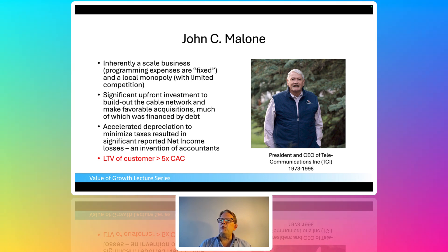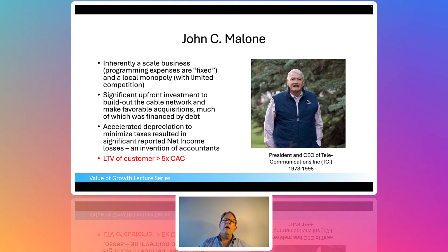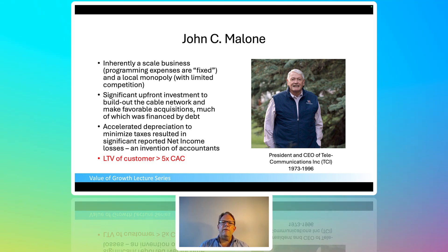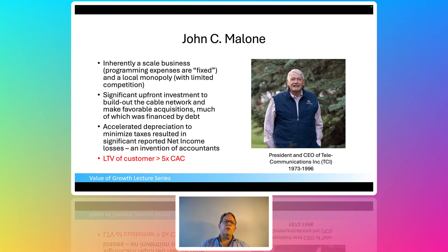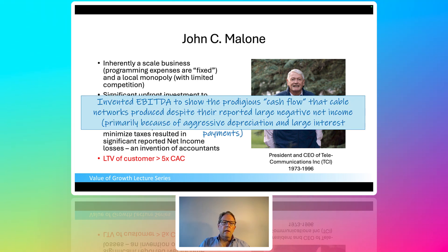John had this simple problem that by traditional measures he wasn't making money. That concerned the bankers and equity analysts, but he needed capital. So he worked up the P&L until he got to the first positive number. The reason I tell this story is that John Malone had a very specific application of EBITDA: he wanted to show he had cash flow that could be used to pay debt and finance acquisitions. We now use EBITDA throughout the private equity world — and that would concern me. John invented EBITDA to show the prodigious cash flow the cable networks produced, despite large negative net income from aggressive depreciation and interest expense.